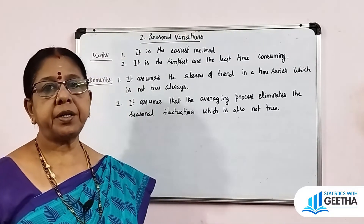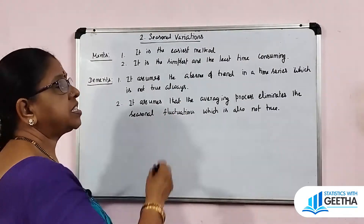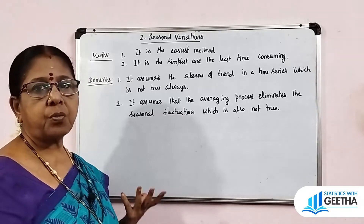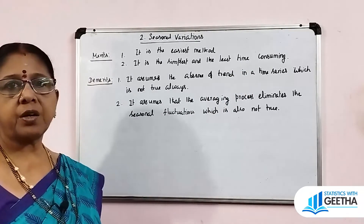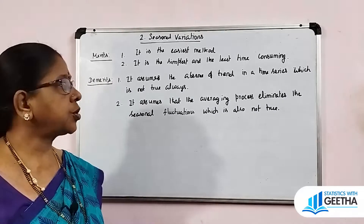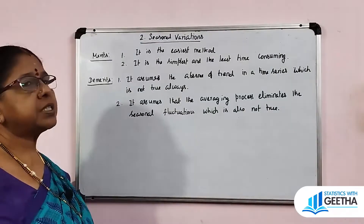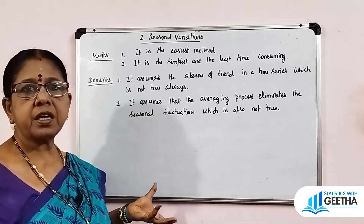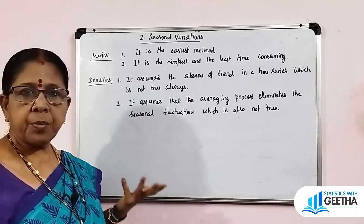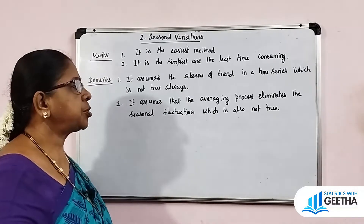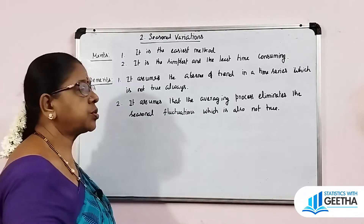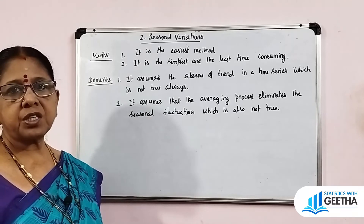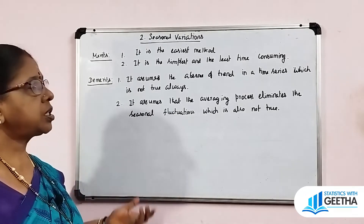Now, the merits and demerits. The merit of this method is that it is the simplest and least time-consuming method for computing seasonal indices. The demerit is that it assumes the averaging process eliminates irregular and trend fluctuations, which is not always true. The assumption that averaging removes all other fluctuations is not valid under all conditions.